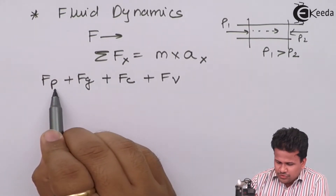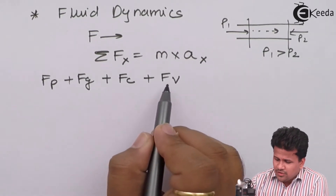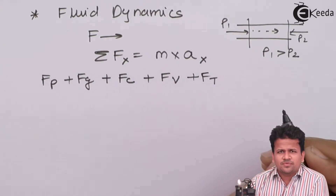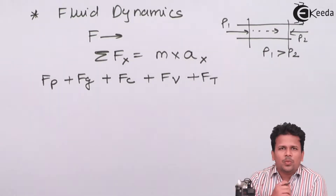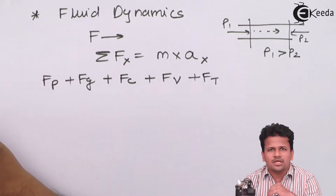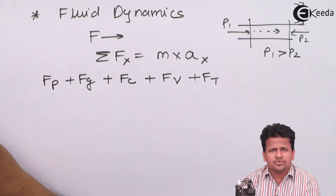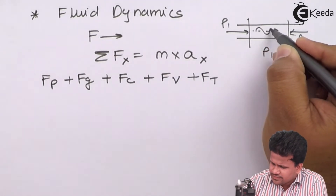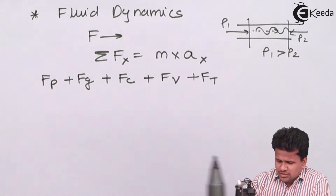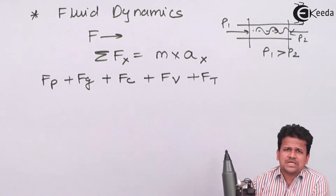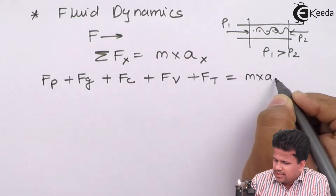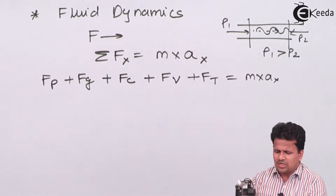So we have force due to pressure, force due to gravity, force due to compressibility, force due to viscosity, and the last force is FT — the force due to the turbulence of the fluid. When the fluid is flowing, there will be turbulence in the adjacent layers of the liquid, where the topmost layer comes in contact with the third, fourth, or fifth layer. Turbulence results in the formation of waves, causing additional resistance to the flow of the fluid.